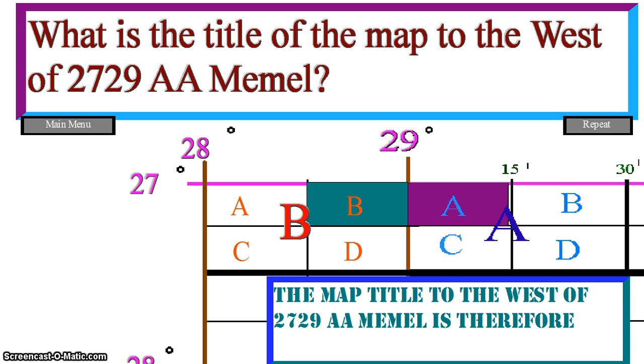The map title to the west of 2729 AA Memel is therefore 2728 BB.